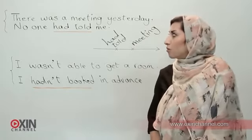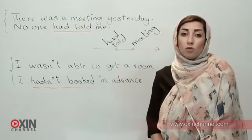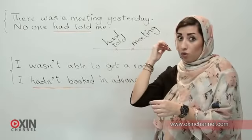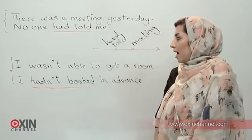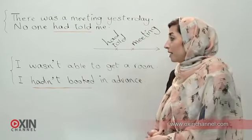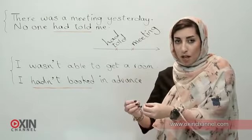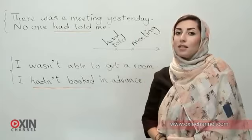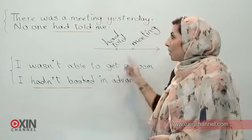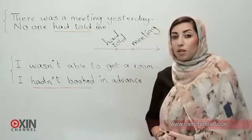Look at these examples. There was a meeting yesterday, no one had told me. I wasn't able to get a room because I hadn't booked in advance. This example is from yesterday's story if you remember. But look at this structure: no one had told me, and I hadn't booked in advance. So this is past perfect.